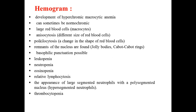The hemogram shows development of hyperchromic macrocytic anemia, sometimes normochromic. Large red blood cells — macrocytes — anisocytosis, and poikilocytosis are present, and remnants of the nucleus are found such as Jolly bodies or Cabot rings in erythrocytes. Basophilic punctation is possible. With decreasing RBCs, there will also be decreased leukocytes, decreased eosinophils, and decreased platelets — because deficiency of DNA formation causes decreased division not only of RBCs but also of leukocytes and megakaryocytes.